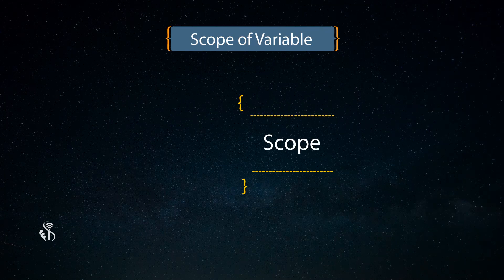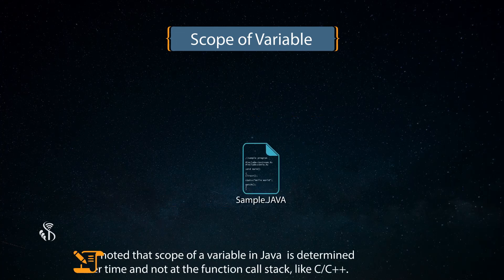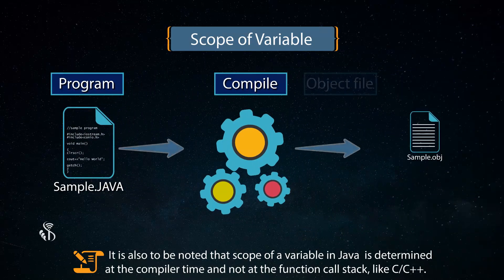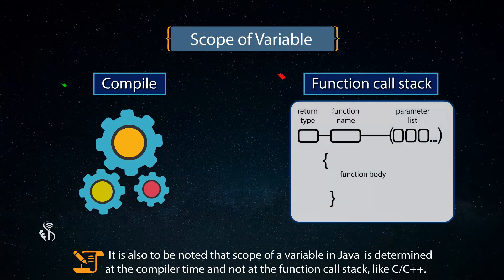Scope also refers to the part of the program or the section of the code which can access the variable. It is also to be noted that scope of a variable in Java programming is determined at the compiler time and not at the function called stack like C or C++.